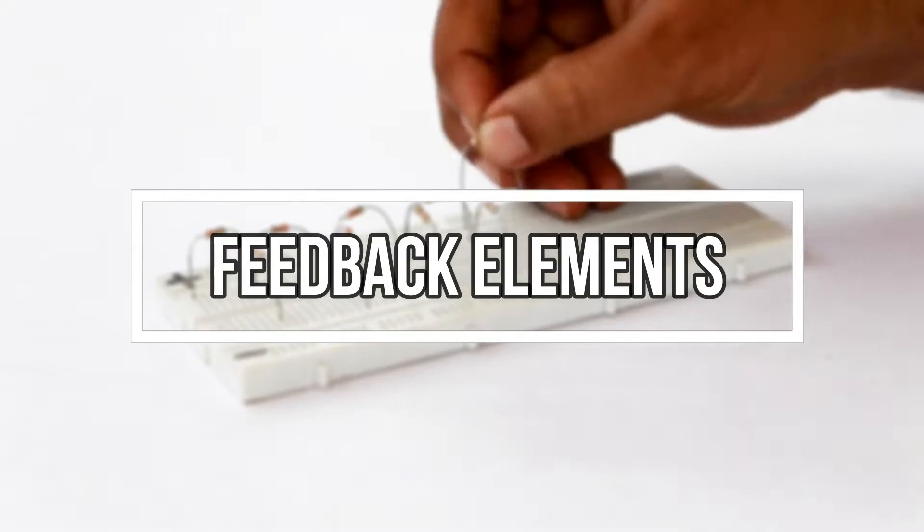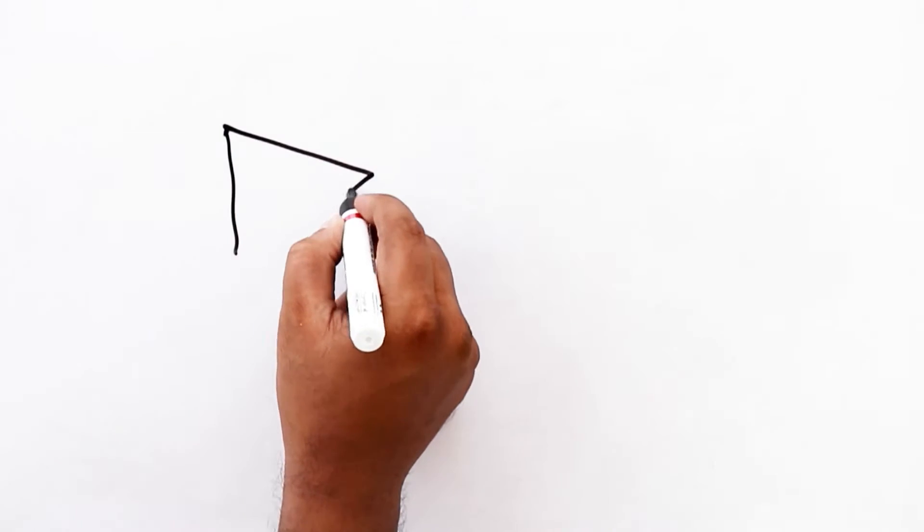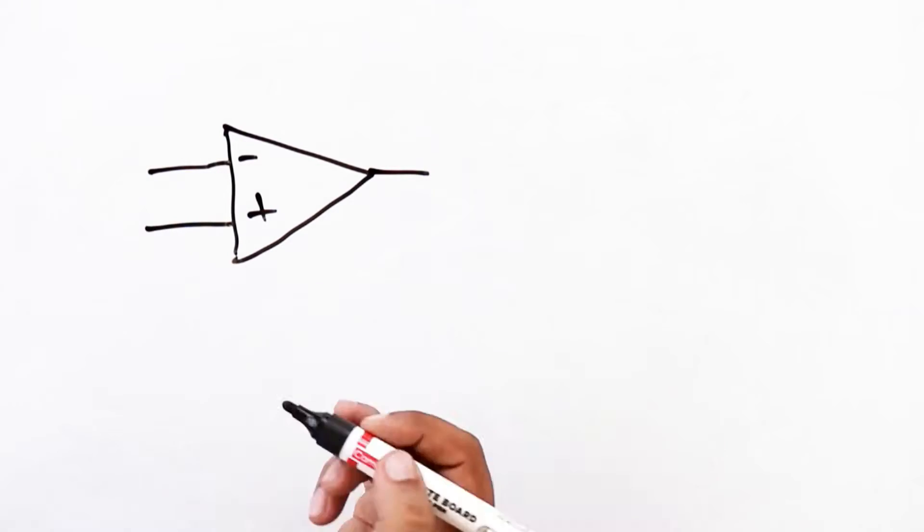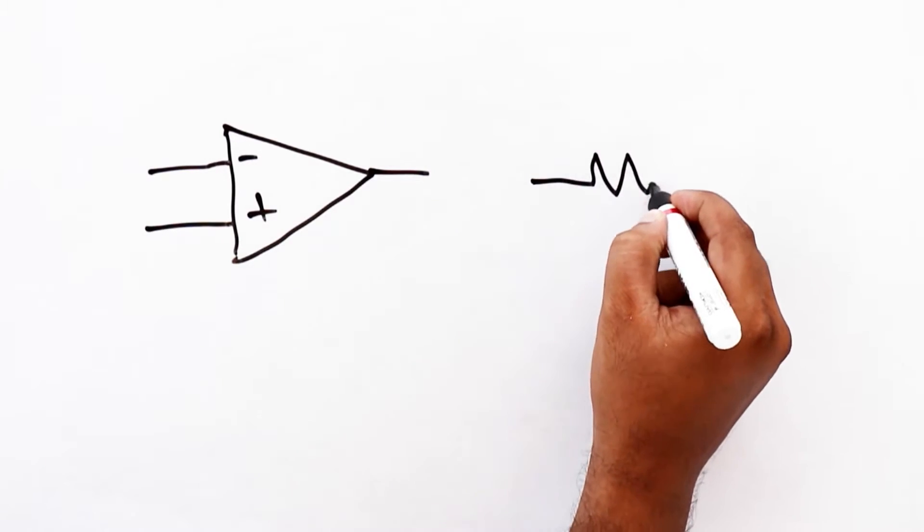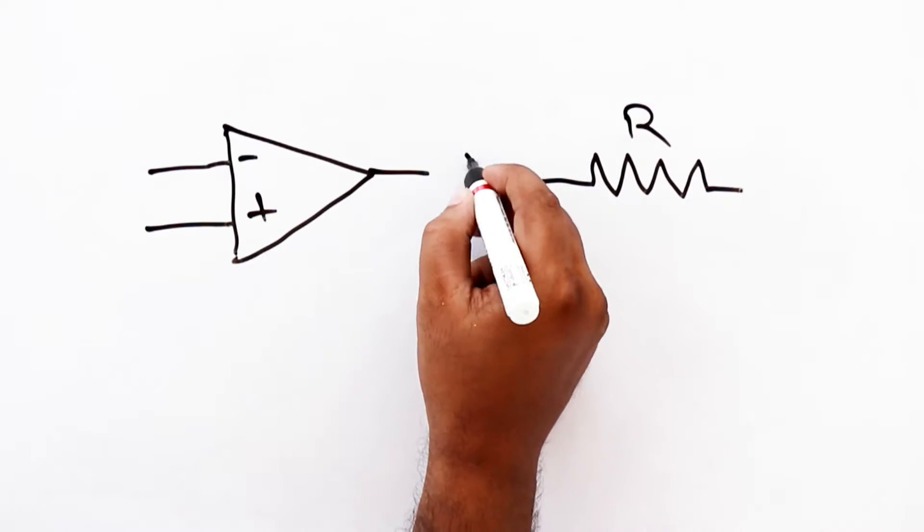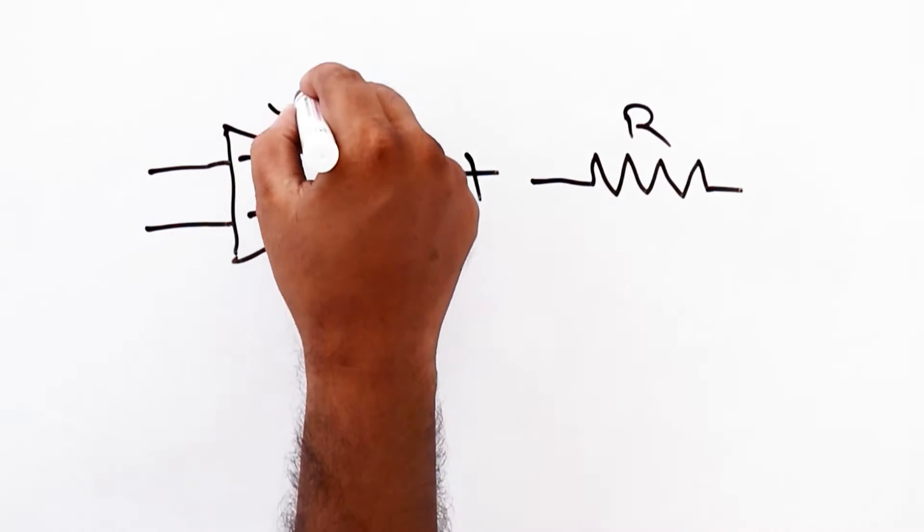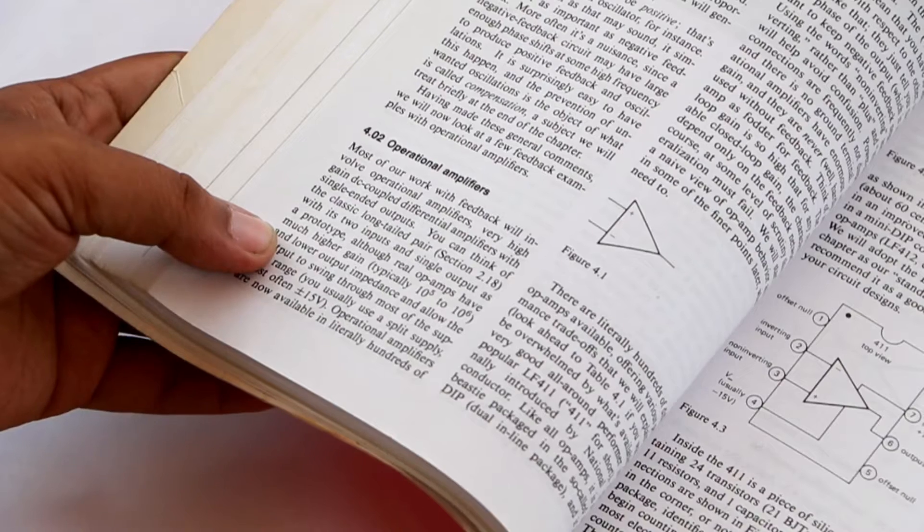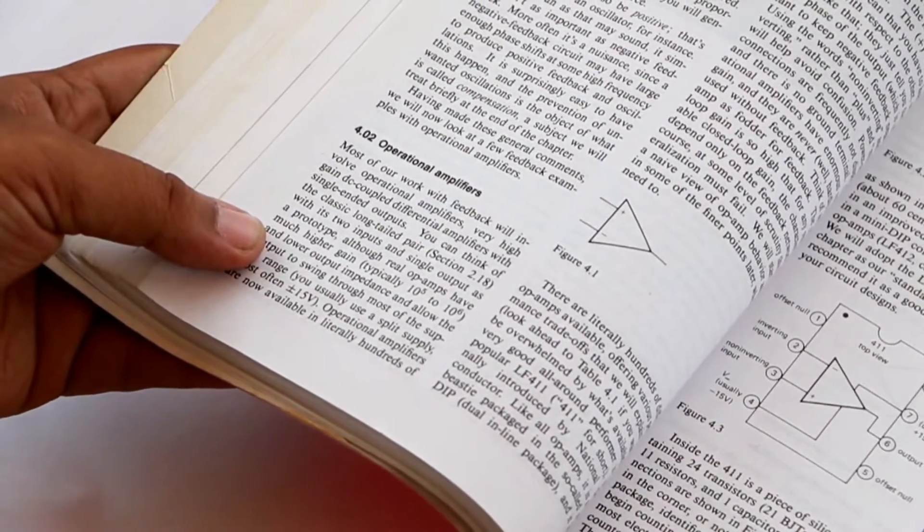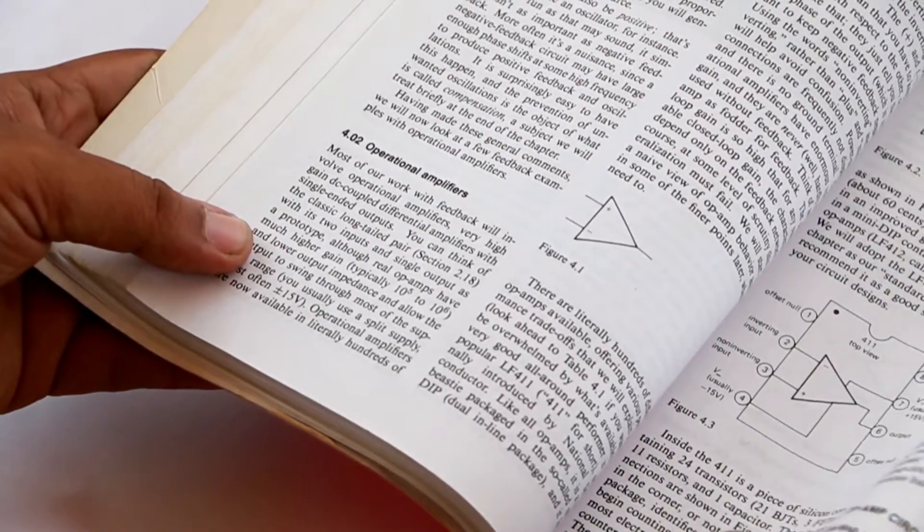Feedback elements. Feedback is a concept used in operational amplifiers popularly known as op-amps. In order to understand the need of resistor as feedback element, we need to understand the working of op-amp.